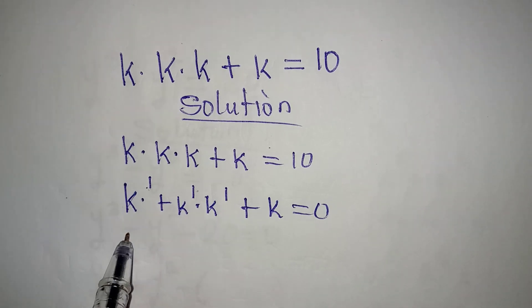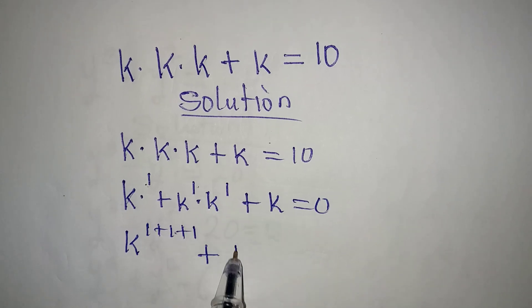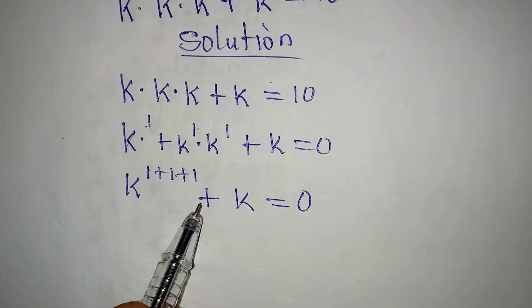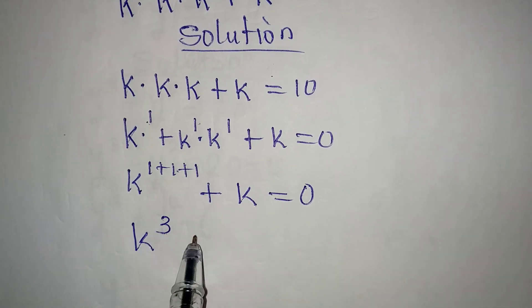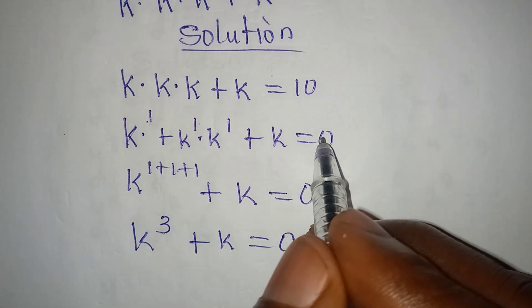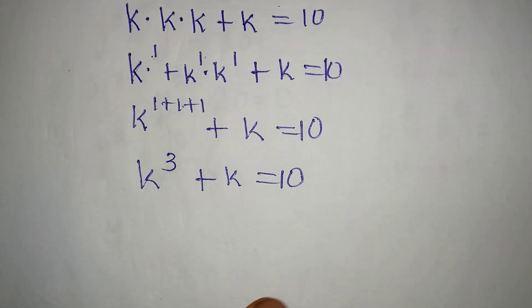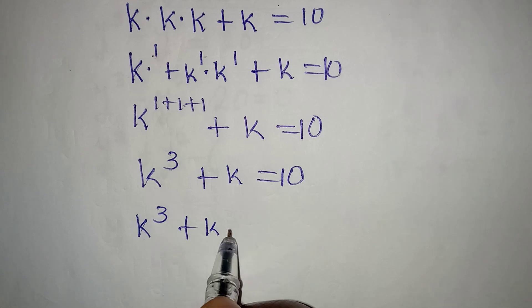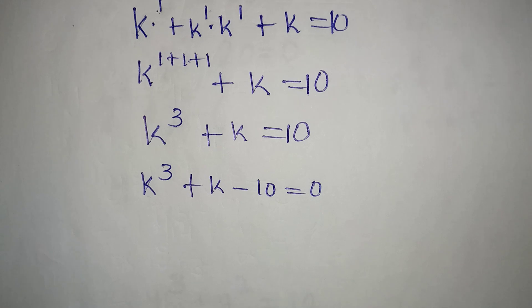Pick one of the bases — we have k — then 1 plus 1 plus 1, then plus k equal to 0. We can't apply the same rule here because we are adding, so k and 1 plus 1 plus 1 will give k to the power of 3, then plus k. This is equal to 10. Let's bring everything to the left, so we have k to the power of 3 plus k minus 10 equal to 0.